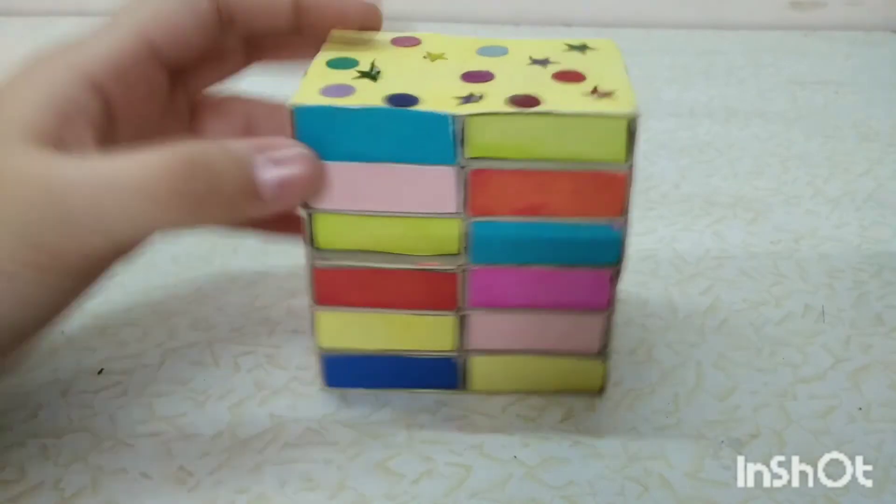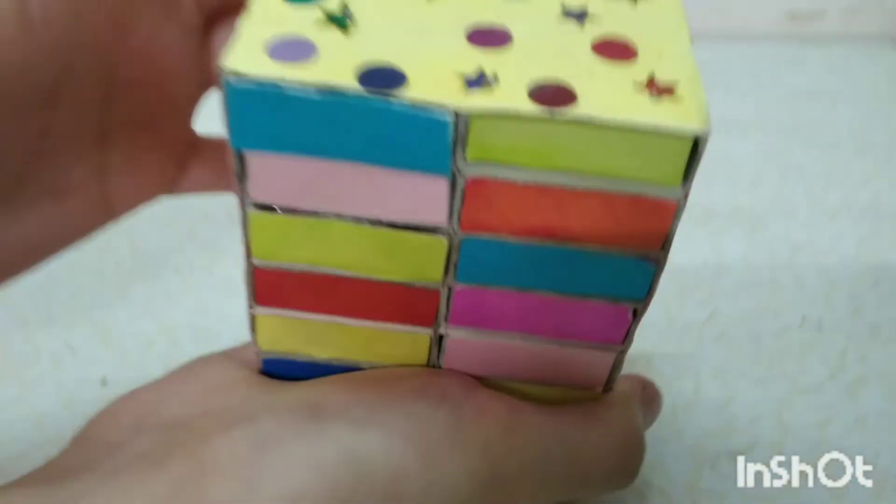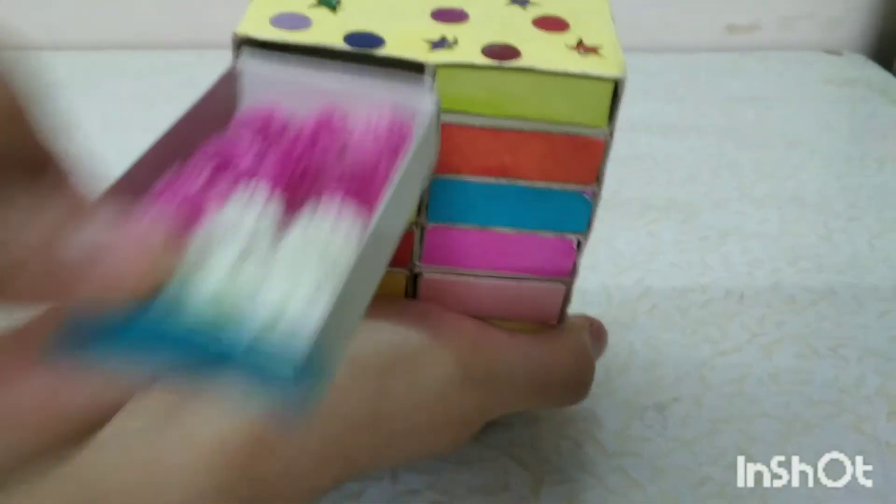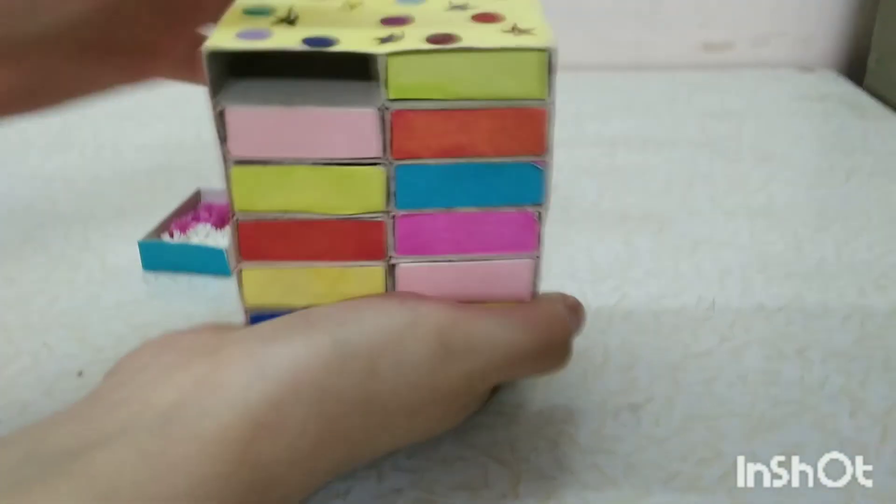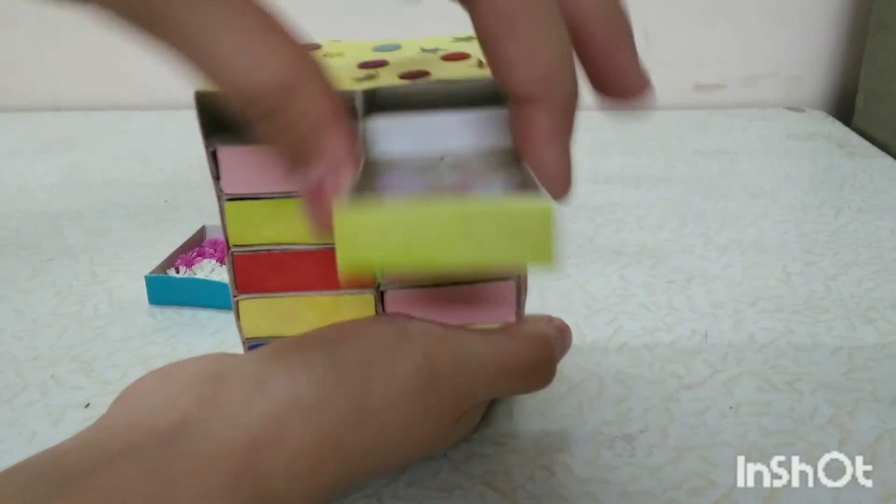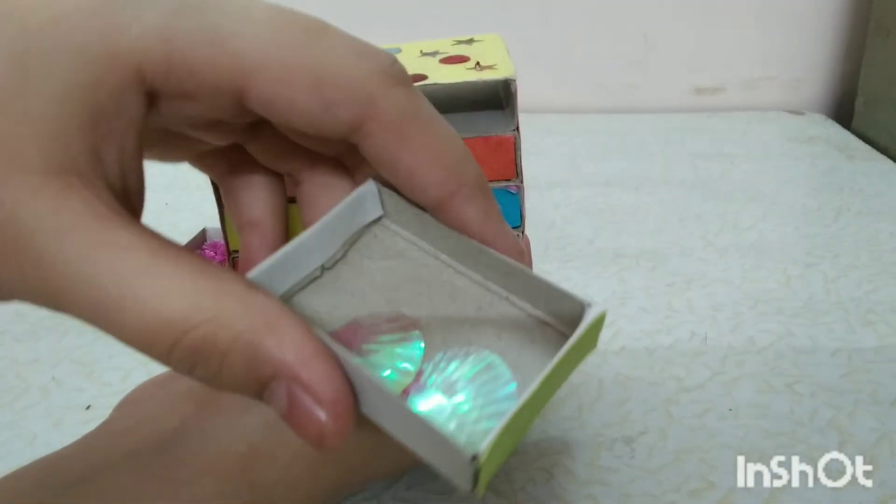In the first drawer I have some flowers. In the second drawer I have my feathers.